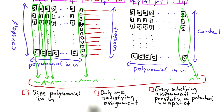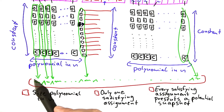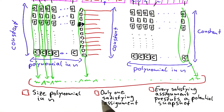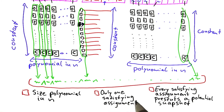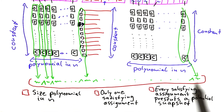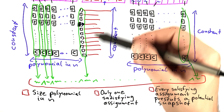So there are three properties or three choices that I'm giving you. One is that the size of this Boolean formula is polynomial in n. The second one is that this Boolean formula has only a single satisfying assignment. And the third one is that every satisfying assignment of this Boolean formula presents a potential snapshot — it kind of uniquely defines what the memory of the RAM looks like and where the program is at.